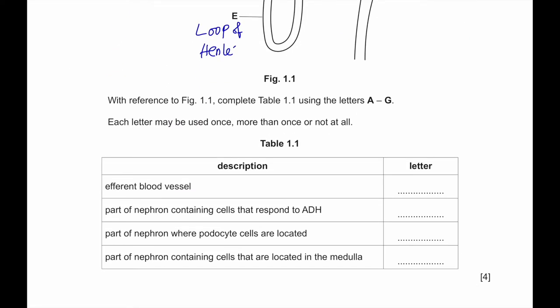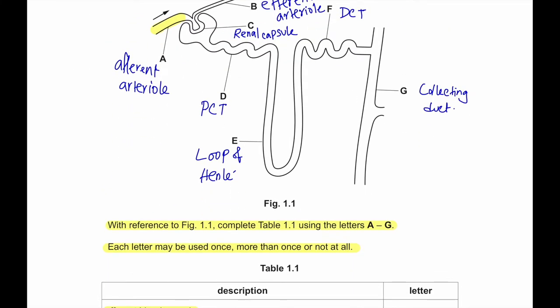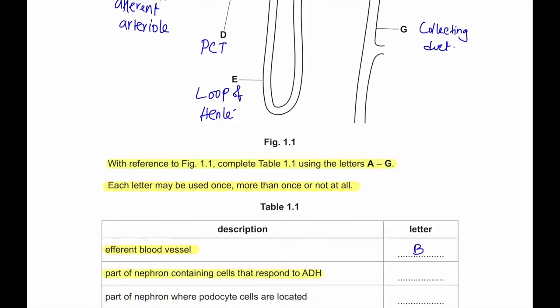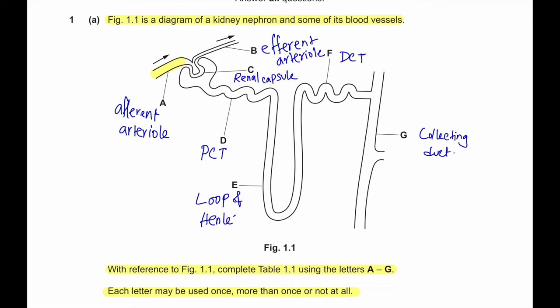With reference to figure 1.1, complete table 1.1 using letters A to G. Each letter may be used once, more than once, or not at all. Efferent blood vessel - definitely efferent blood vessel is B. Part of a nephron containing cells that respond to ADH. We know cells that respond to ADH are in the collecting duct, so it will be G. Part of a nephron where podocyte cells are located. Podocyte cells are located in renal capsule, so it will be C.